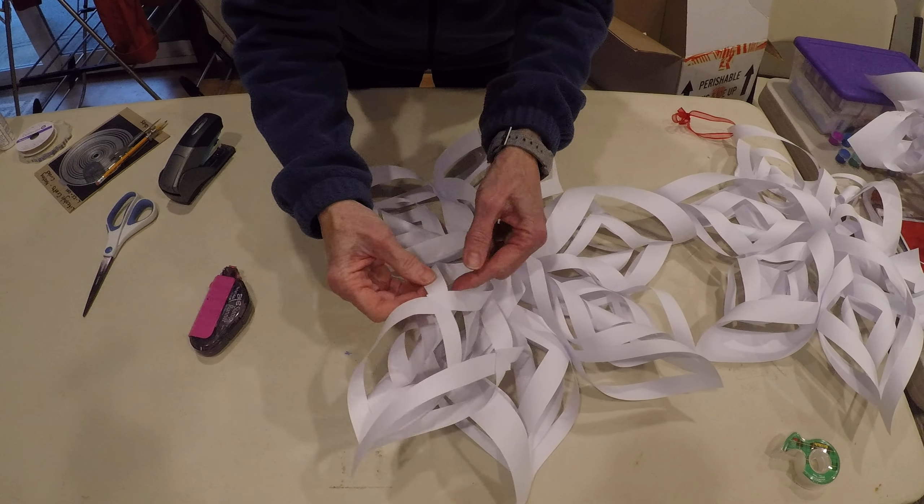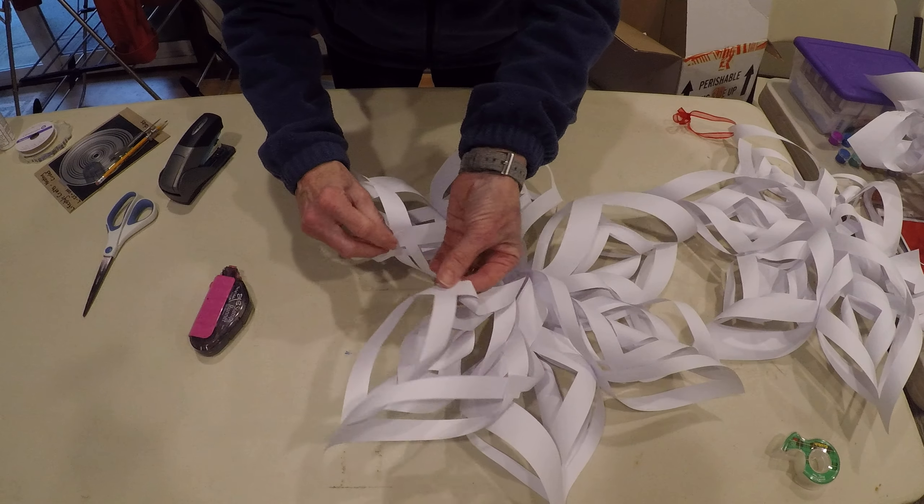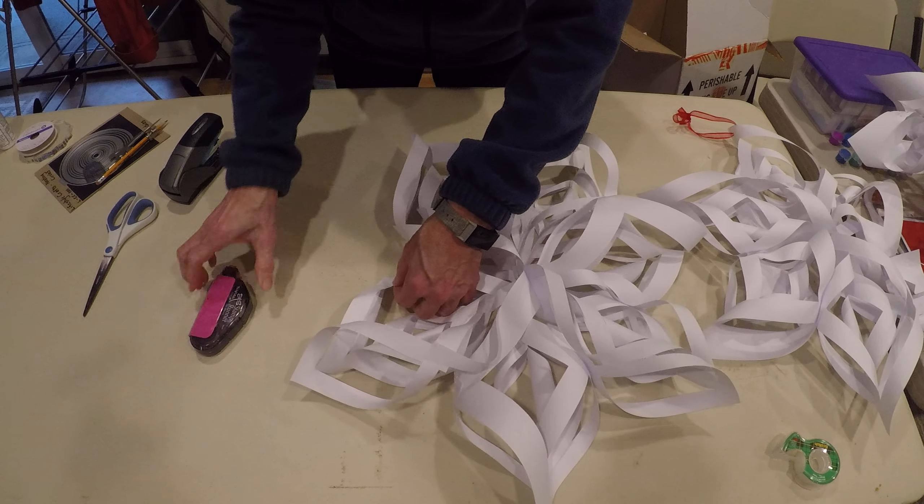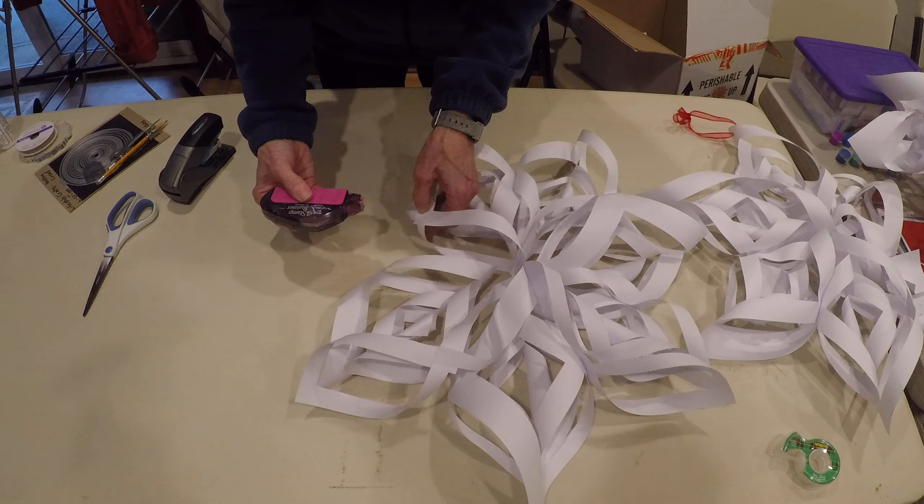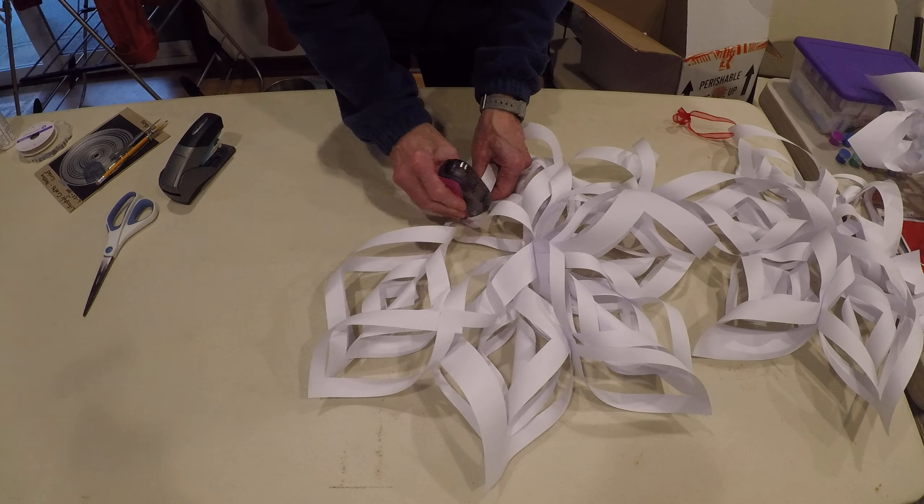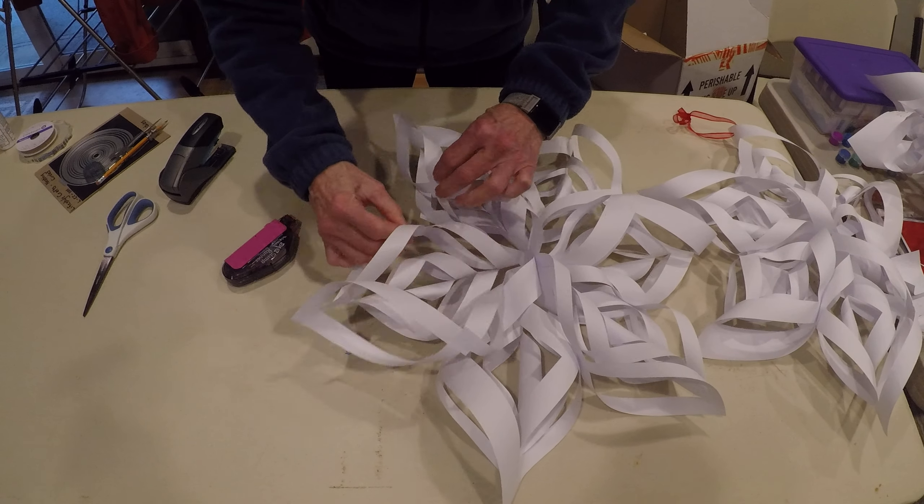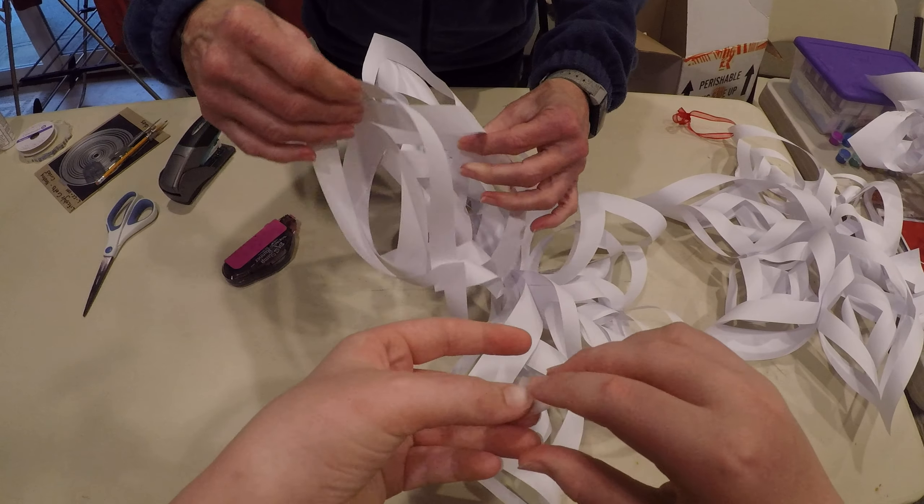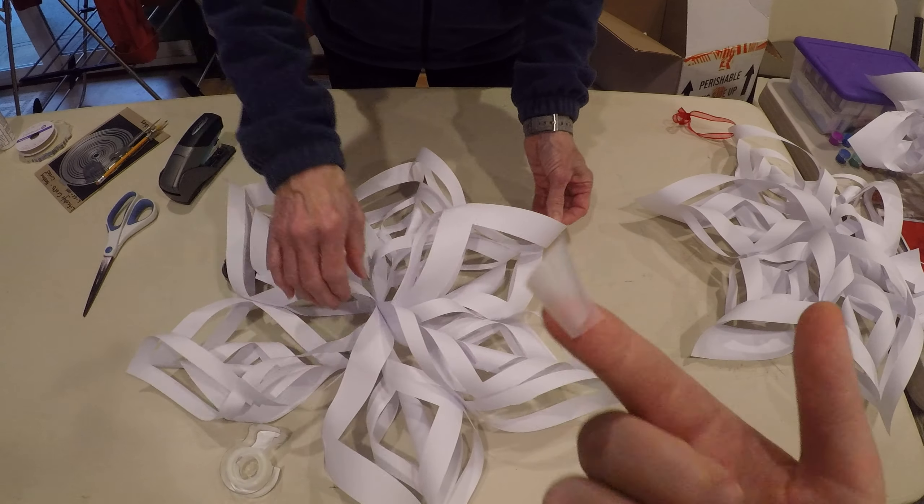The last step is to take the piece right here, which is one of the middle pieces, and tape those two pieces together. This helps hold the whole snowflake together. You can do this with a scotch tape roll as well—just roll it over and you have a nice roll that you can stick between.